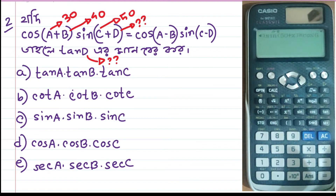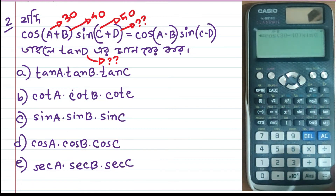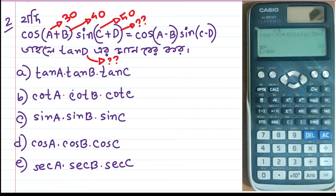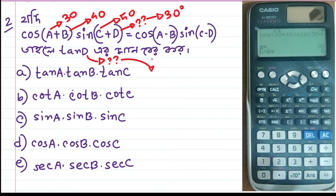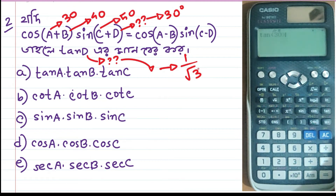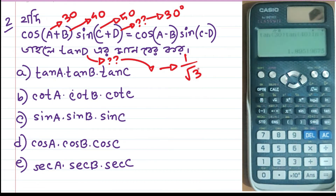Value 30, value 40, so 30 minus 40, then sin(c−d), c value 50. So tan 30, then tan 40, then tan 50 — the result is 1.89.